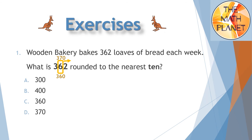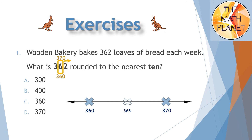The answer could be C or D. Let's draw the number line and put the halfway number 365. Next I will put 362 on the number line. I notice it is closer to the lower benchmark, which means the correct answer is 360.